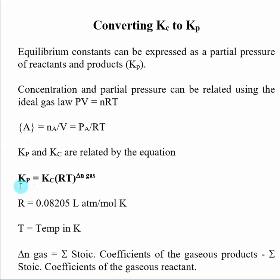So the equation that we get out is that the Kp, the equilibrium constant for a reaction in terms of partial pressures, is equal to Kc, the equilibrium constant in terms of molarity, times RT raised to the power of delta n gas.